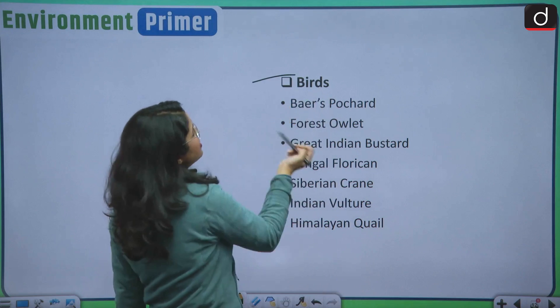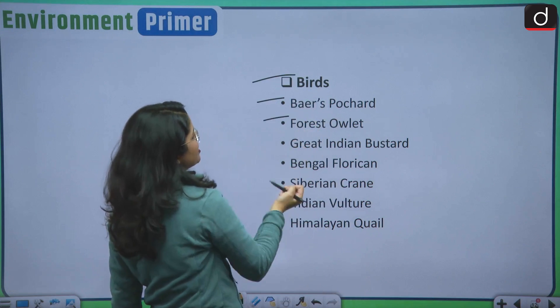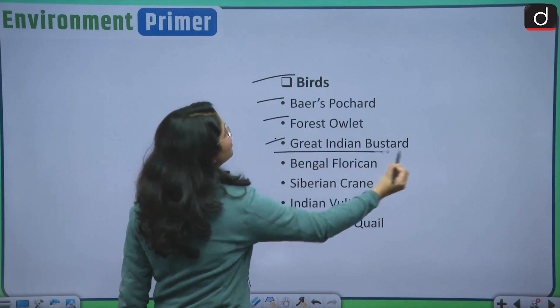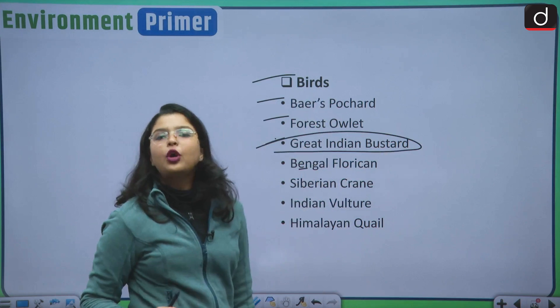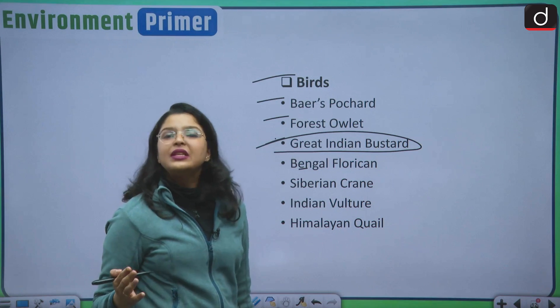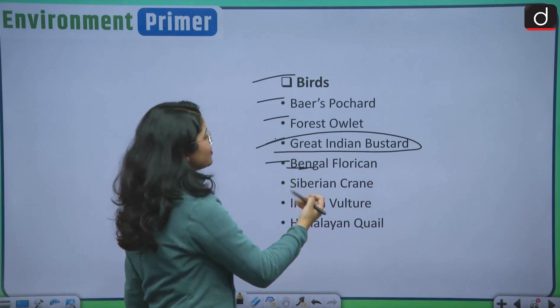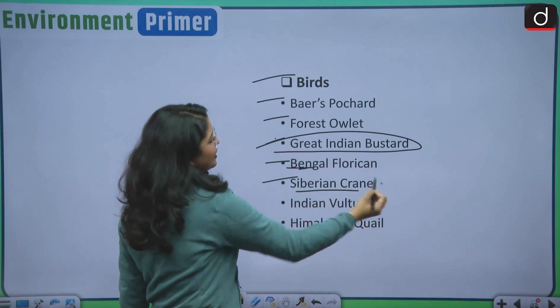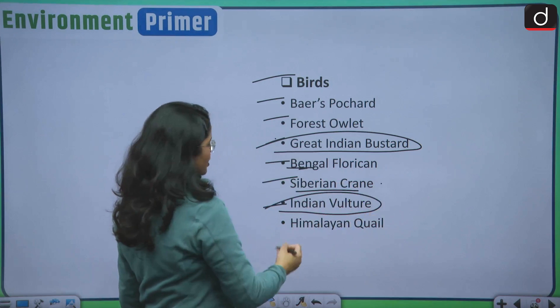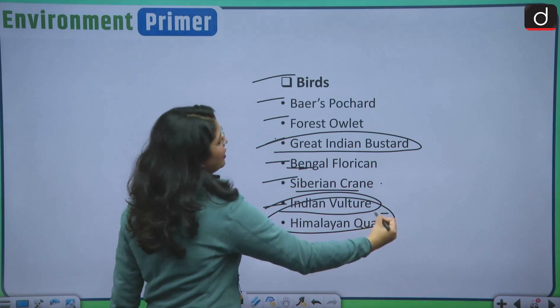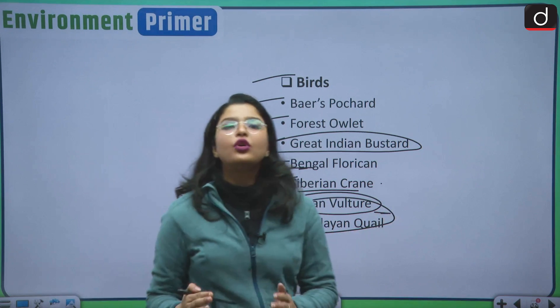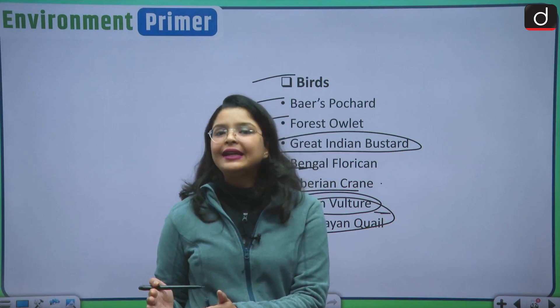Then there are birds: bears pochard, forest owlet, Great Indian Bustard. Very, very important from your prelims perspective. A question can be seen on the Great Indian Bustard. Then there is Bengal Florican, Siberian Crane, Indian Vulture and the Himalayan Quail. All of these Indian birds are critically endangered.